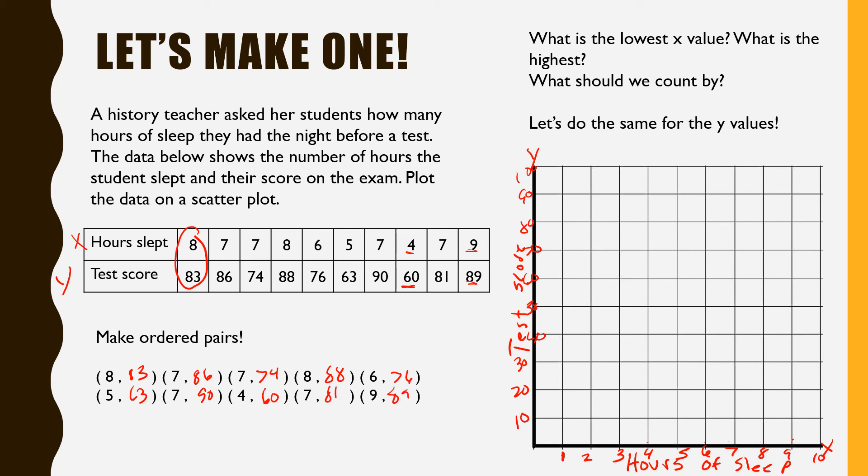And then we just plot them over eight, up 83. If this is 80, that's 90 halfway, less than halfway, that'd be 83. Seven and 86, so seven, a little more than halfway, 85 would be 87 and 74. That's less than halfway between 70 and 80. Eight and 88. Let me have a mistake here. This should be seven and 74.